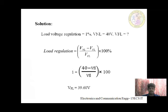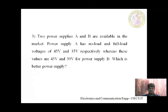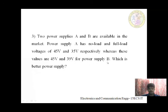Problem 3: Two power supplies A and B are available. Power supply A has no-load and full-load voltages of 45V and 35V respectively, whereas power supply B has values of 45V and 39V. Which is the better power supply? The power supply with the lower voltage regulation is better.